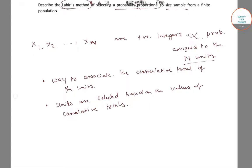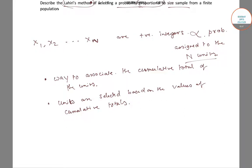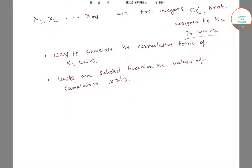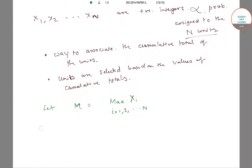Let us describe the Lahiri method. We define m, which is equal to the maximum of xi, where i goes from 1 to N. So m is the maximum of xi for i from 1 to N.